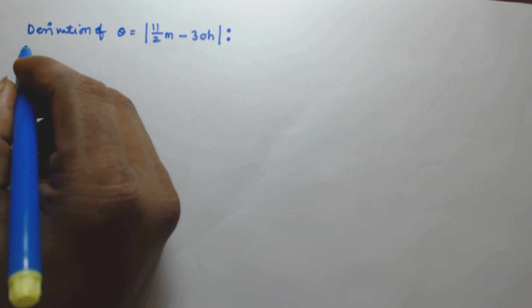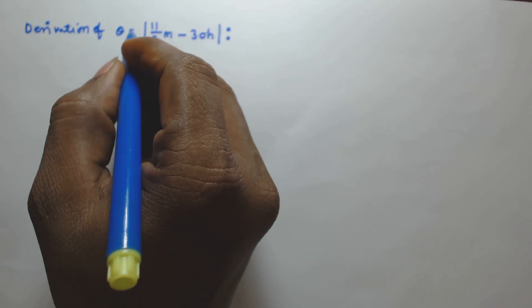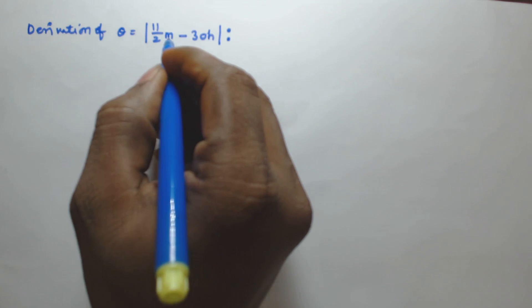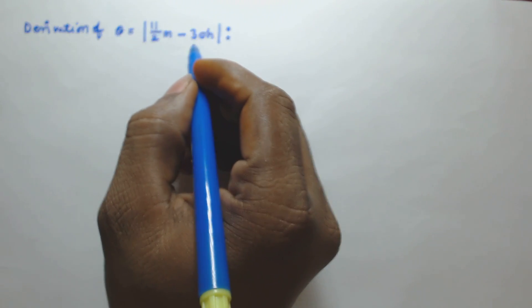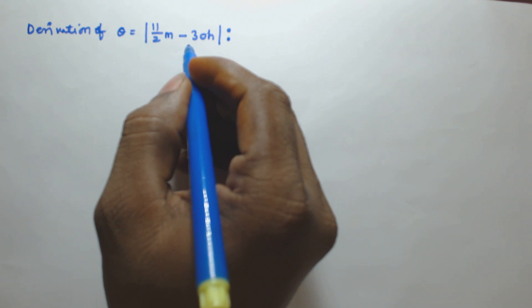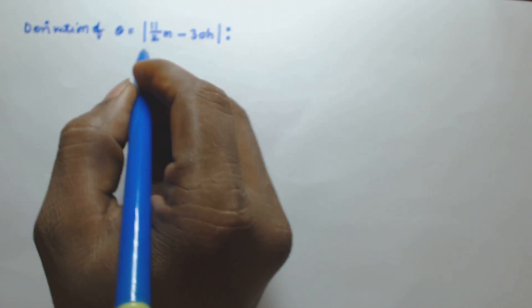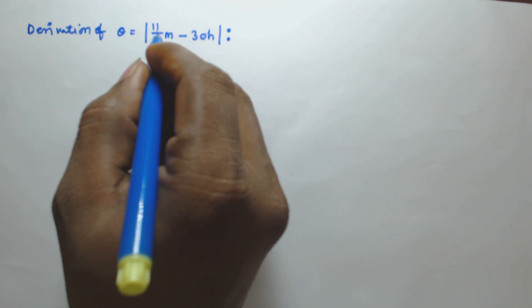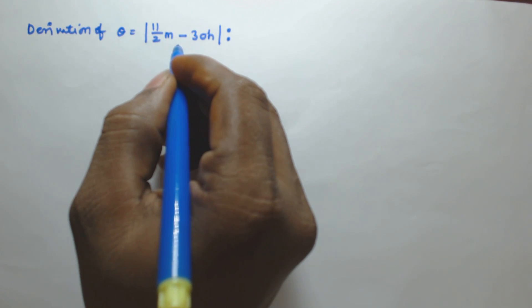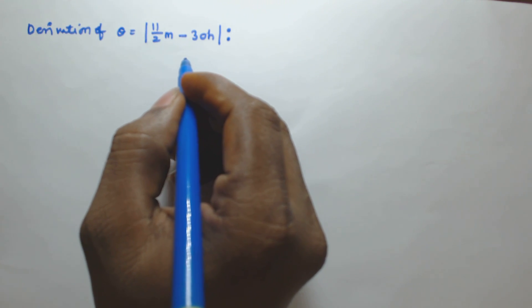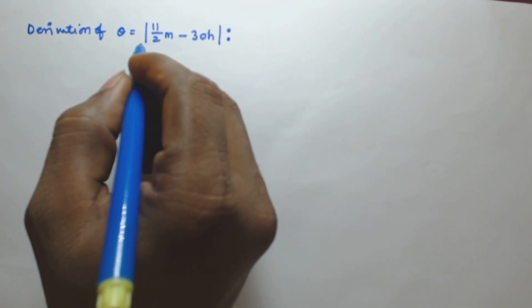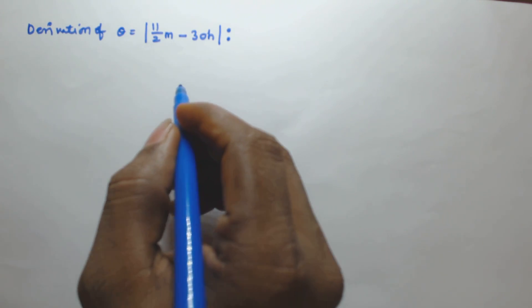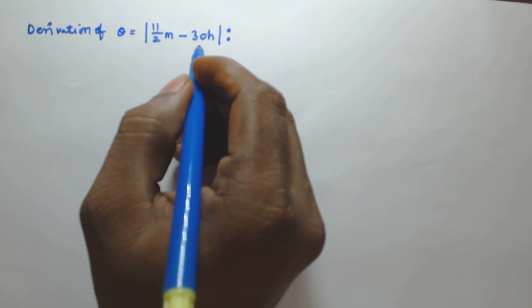Hello friends, in this video we will see the derivation of the angle between two hands of the clock: θ = 11/2·m − 30h. In the previous videos related to clock problems, I told you to use this shortcut formula. Most people in the comment section asked how we can actually derive this formula, so in this video I am going to show you.